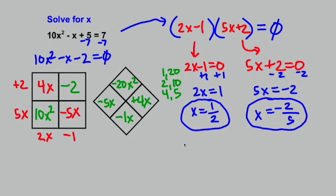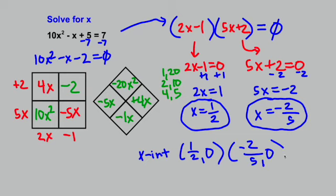Technically we're done here, but just to remind you once again, what this tells us once we get these answers is I now know the x-intercepts. If I were to graph the equation 10x squared minus x minus 2 equals y, those x-intercepts would be, one of them would be 1 half comma 0, that would be the coordinate, and the other one would be negative 2 fifths comma 0.